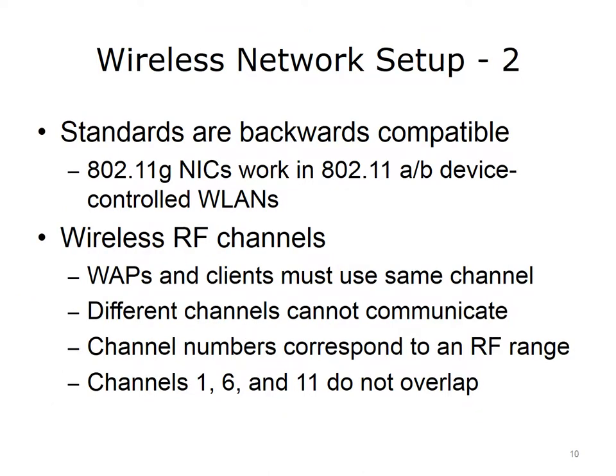It is important to keep in mind that standards are backwards compatible. In other words, IEEE 802.11G NICs work with IEEE 802.11A or B device-controlled wireless LANs. WAPs and clients must also use the same channel. Remember, valid channels in North America are between 1 and 13. If a WAP is on channel 6 and a client is on channel 1, the two will not be able to communicate with each other. Channel numbers correspond to an RF range. Note that channels 1, 6, and 11 do not overlap. Therefore, in North America, it is good practice to use one of these channels.